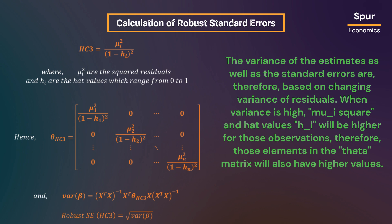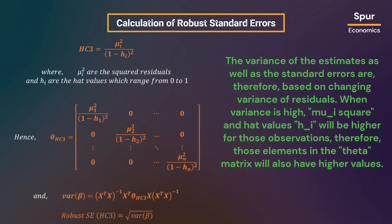As a result, we incorporate the changing variance of residuals since the elements of the theta matrix are based on each residual separately. The variance of the estimates and the standard errors are therefore based on changing variance of residuals. When variance is high, mu-i squared and hat values h-i will be higher for those observations, so those elements in the theta matrix will also have higher values. This is how we estimate robust standard errors to incorporate heteroscedastic residuals.